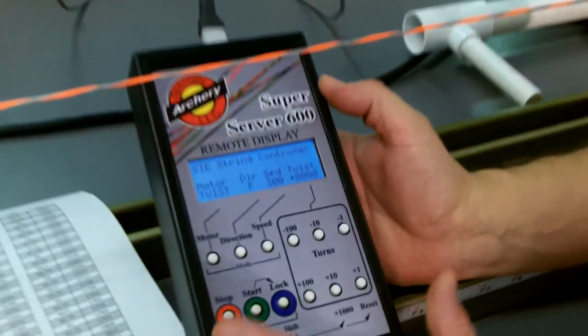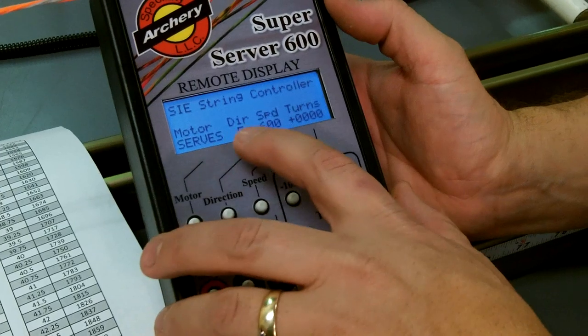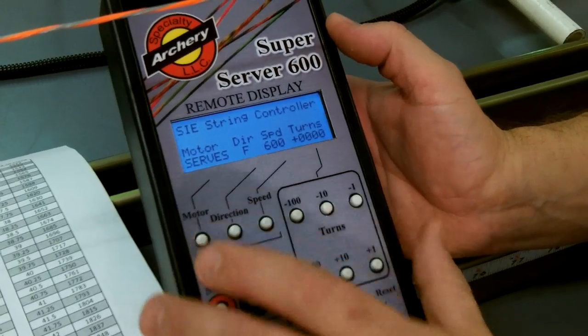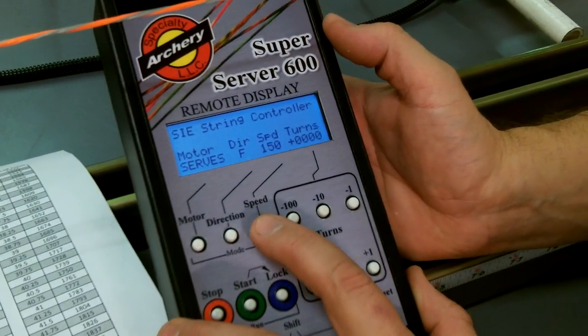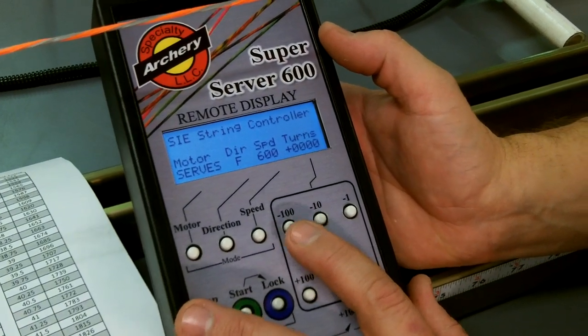From twist, I'm going to select serve. Forward is the direction I'm going to serve. Speed, you can select up to 600 RPM and the number of turns. Now I'm using a BCY 3D serving.